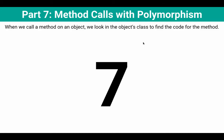Part seven is method calls with polymorphism. Polymorphism is where we have one way to interact with objects of multiple types. That's when the variable type is a parent or grandparent type of the actual object.